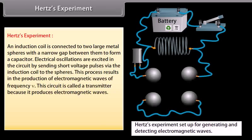Hertz experiment. An induction coil is connected to two large metal spheres with a narrow gap between them to form a capacitor. Electrical oscillations are excited in the circuit by sending short voltage pulses via the induction coil to the spheres, charging one sphere positive and the other negative. In this ionized state the electrons and ions in the air gap oscillate back and forth with the same frequency nu as that of the circuit. This process results in the production of electromagnetic waves of frequency nu. This circuit is called a transmitter because it produces electromagnetic waves.